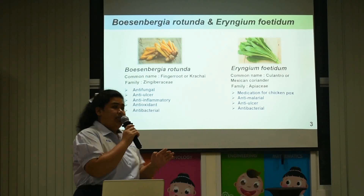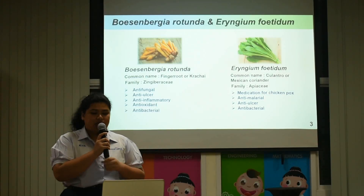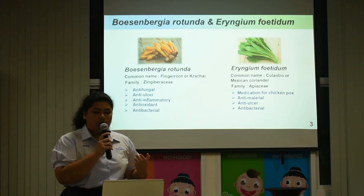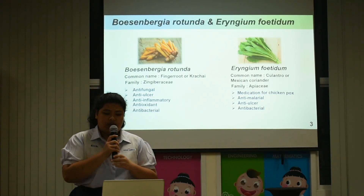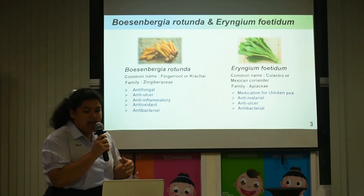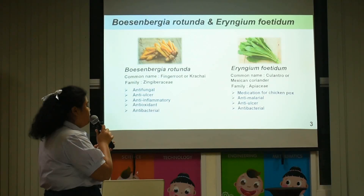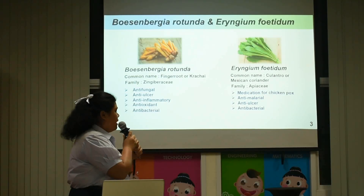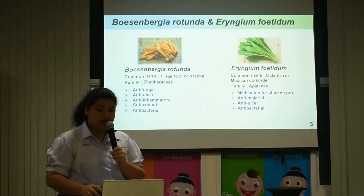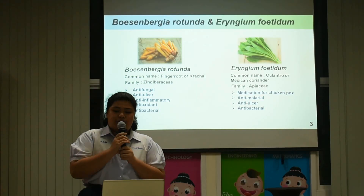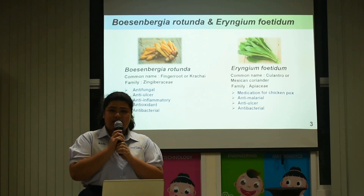Curcuma Fatida has the common name coriander, or Mexican coriander, and in Thai language is called Phak Chi Farang. Coriander can be used as medication for chickenpox, anti-malaria, anti-ulcer, and antibacterial. I chose both of them because they have known antibacterial properties.